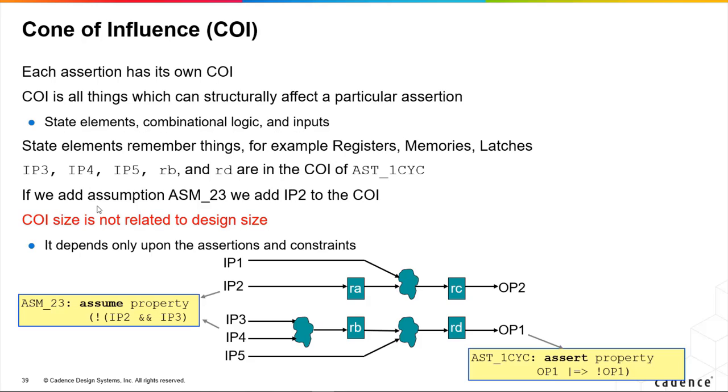When we talk about size and complexity for formal, we're talking about the size of the COI, not the design, and for each assertion that will be unique. All that depends upon the COI is the assertions and the constraints, not the entire design size.